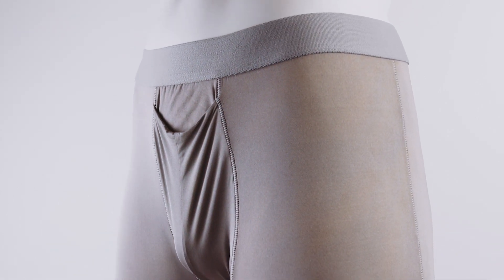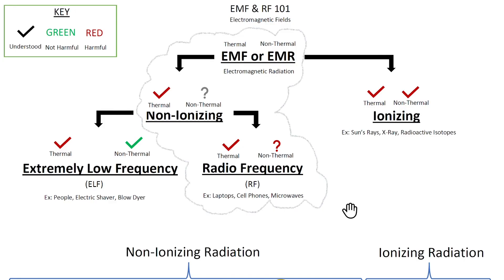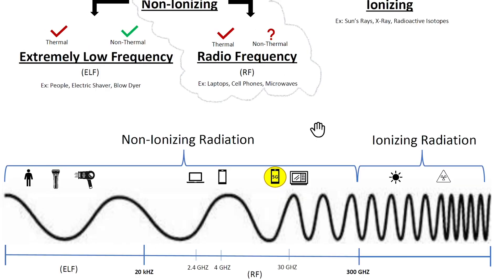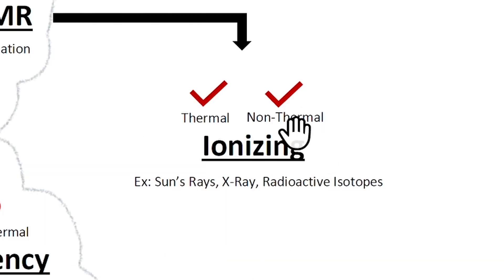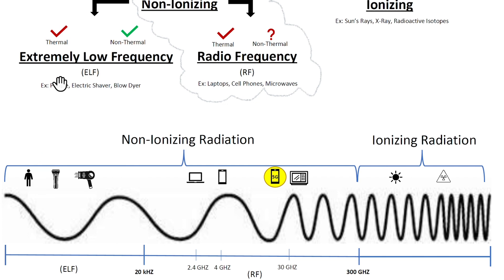But remember, this is just an EMF and RF 101. Getting back on track, radio frequencies or RF are the type of frequencies that laptops, cell phones, and microwaves operate on. Look down here at this very basic and not-to-scale electromagnetic spectrum. This curve here represents all the different frequencies the above examples operate on. To the right, you have the higher frequencies, which is what radioactive isotopes emit — very harmful, so red. To the left at the end, you have lower frequencies that humans emit — not harmful, so green. And within these frequencies travels energy we measure in photons.